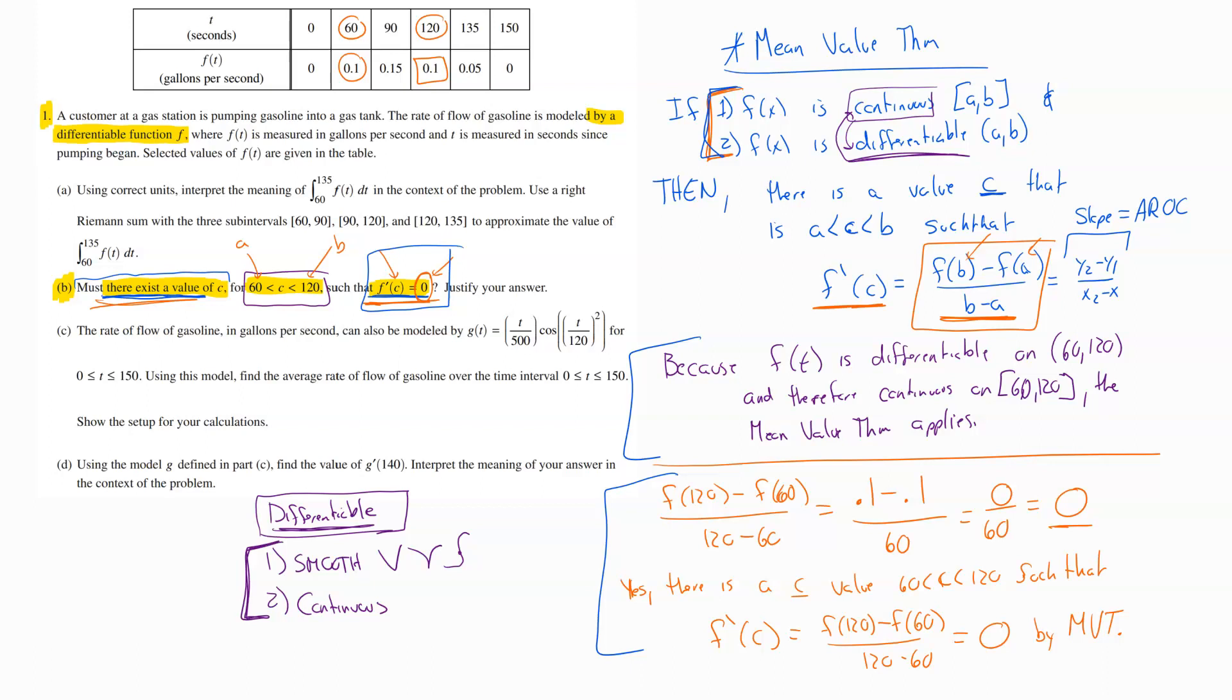So this would have been worth two points on the test. You'd have gotten one point for putting together this piece of it here, and then you would have gotten one point for saying yes because of this. By the mean value theorem, you needed to say this piece in order to use it. So it's one big explanation for why you get to use it, but two points total.